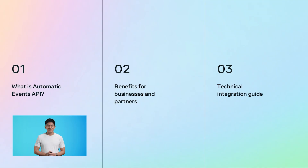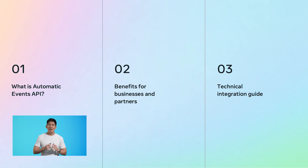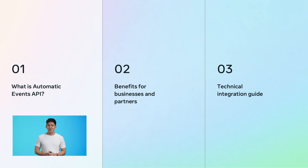Imagine a world where you can automatically identify valuable customers' interactions without lifting a finger. Sounds like magic, right? Well, it's not. It's the Automatic Events API. Let's take a closer look at what we will cover today. We will start with an introduction to the Automatic Events API, then explore its benefits, after which we will dive into the Technical Integration Guide. First up, let's learn more about what this feature is all about.